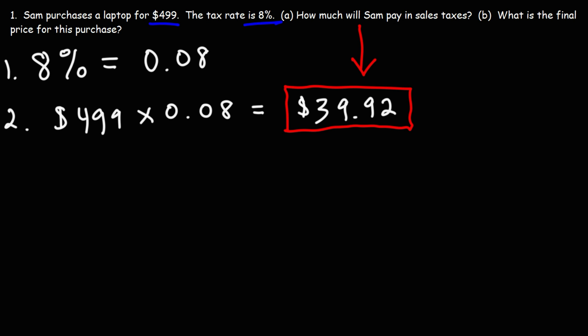Now what about part B? What is the final price for this purchase? All we have to do to get the final price or the total amount that Sam is going to pay, we need to add up the price of the laptop with the sales tax. So we're going to add $499 with $39.92, and we could do this the old-fashioned way. If you want, you can add two zeros here.